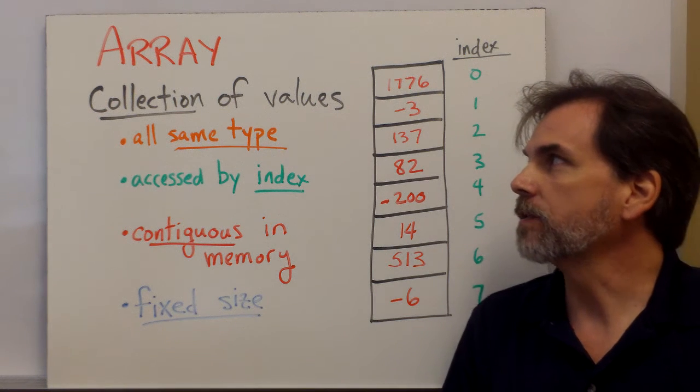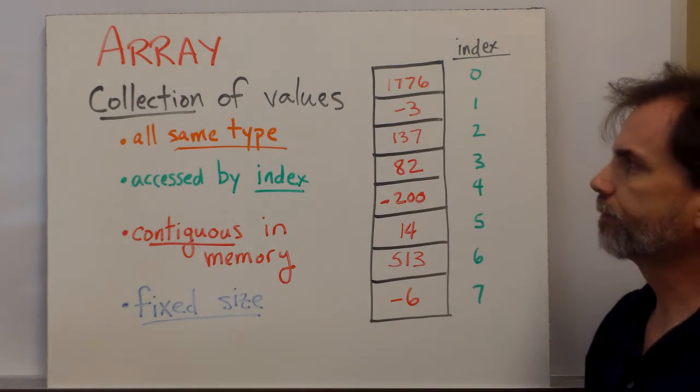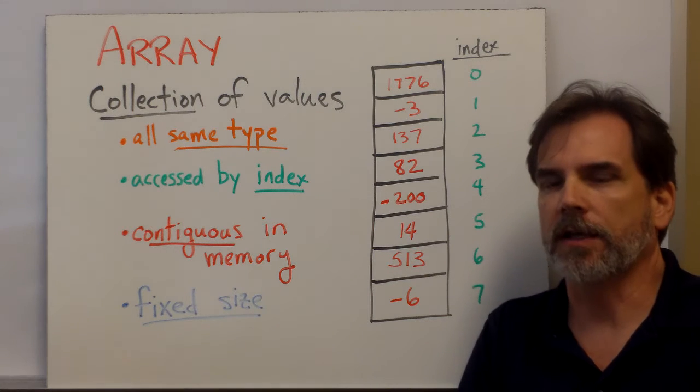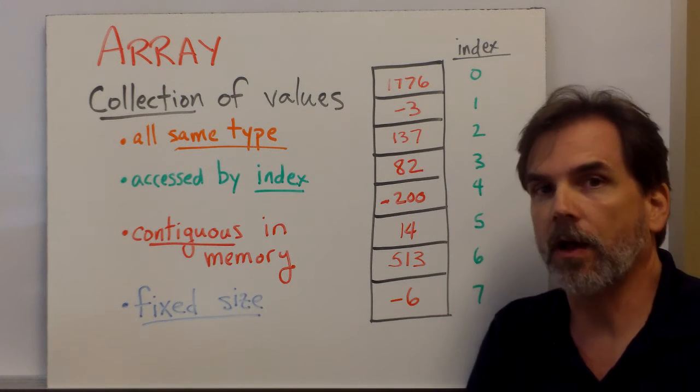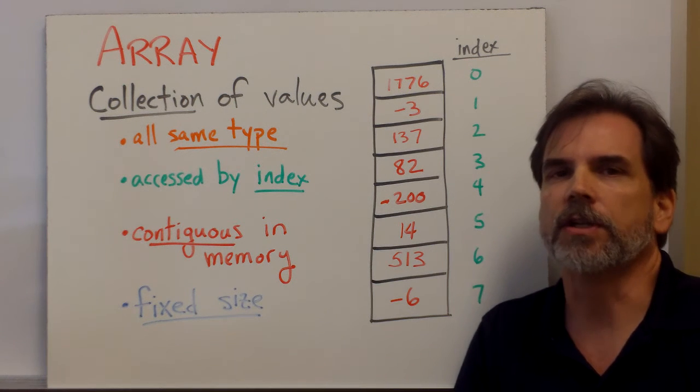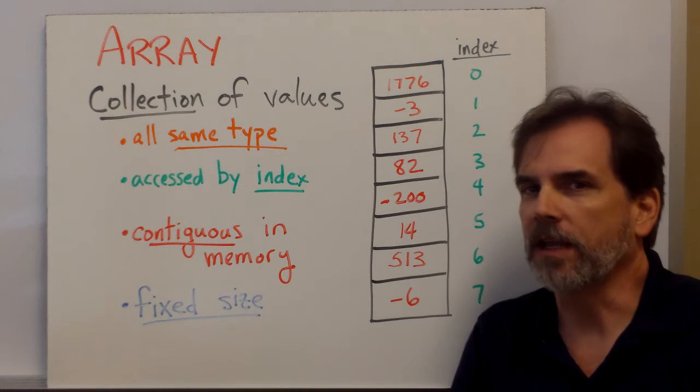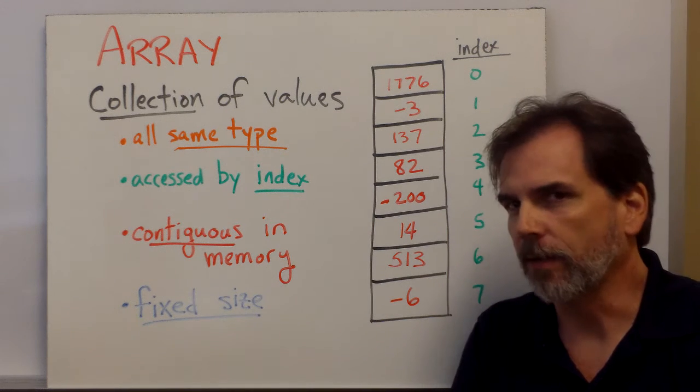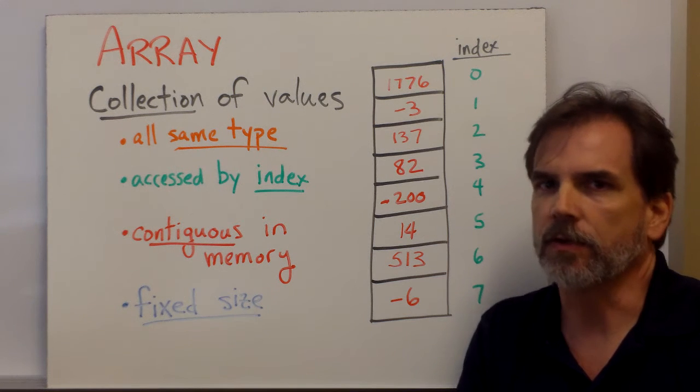So an array in C is a collection of values. And an array has several characteristics. First is that all of the elements of the array, all of the data in the collection, must be of the same type. So we can have an array of integers, an array of doubles, an array of cars. We can't mix types within a single collection.